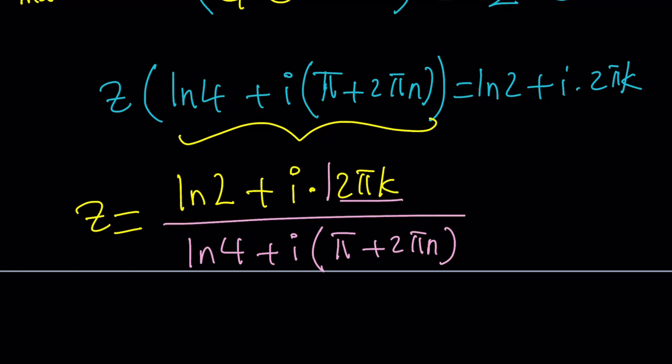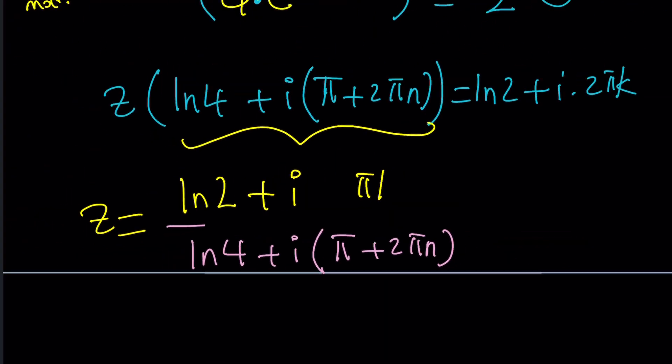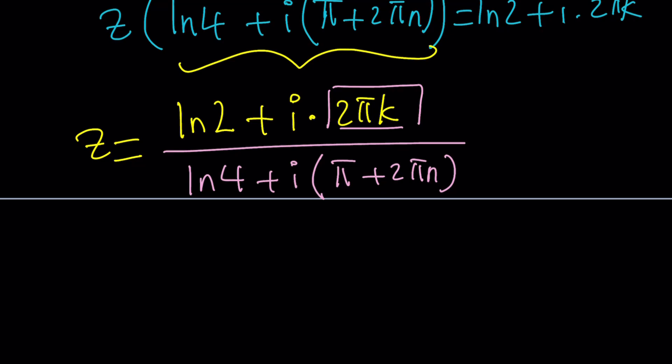Now, what should we do? Divide both sides by this. Then we're going to get z by itself. z is going to be ln 2 plus i times 2 pi k. I write the i first. Sometimes people are going to write it as 2 pi k i, but I want to write the i so that I can emphasize the imaginary part of this complex number. And that's going to be 2 pi k in this case. And I'm going to divide it by ln 4 plus i times pi plus 2 pi n.